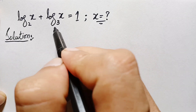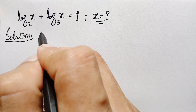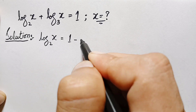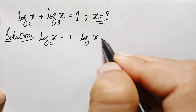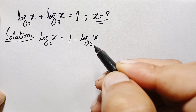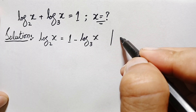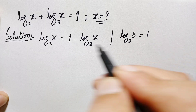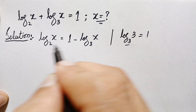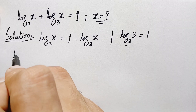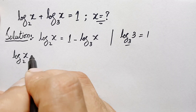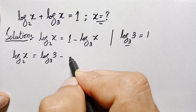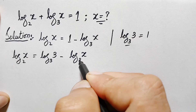First of all, we will move log of x with base 3 to the right hand side. So this will become: log of x with base 2 is equal to 1 minus log of x with base 3. We know that we can write log of any number with the same base equal to 1, so we replace this 1 with log of 3 with base 3. This equation becomes: log of x with base 2 is equal to log of 3 with base 3 minus log of x with base 3.